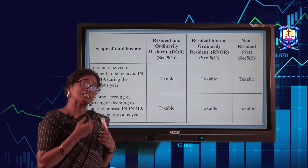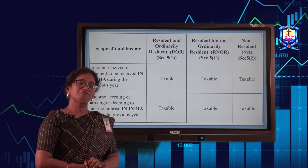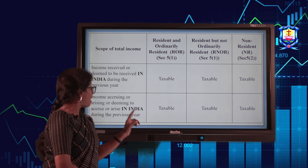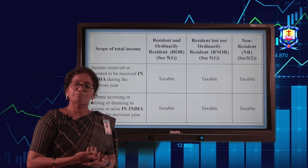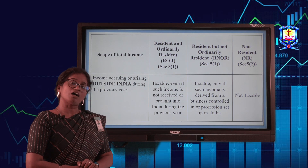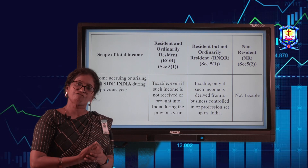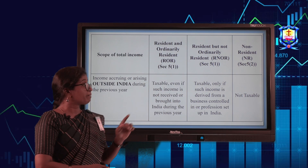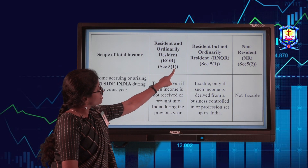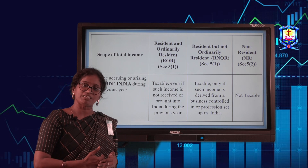We need to check whether the income earned by the person is taxable or not based on their residential status. Income received or deemed to be received in India is taxable for all taxpayers — whether ROR, RNOR, or NR. Income accruing in India, meaning the source is from India, is also taxable for all taxpayers. For foreign income — where both receipt and source are outside India — non-residents are not taxable at all. For RNOR, foreign income is taxable only if the business is controlled from India or the profession is set up in India.